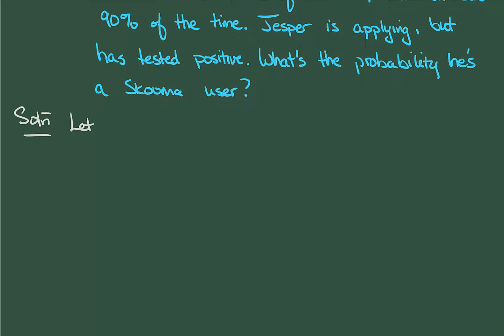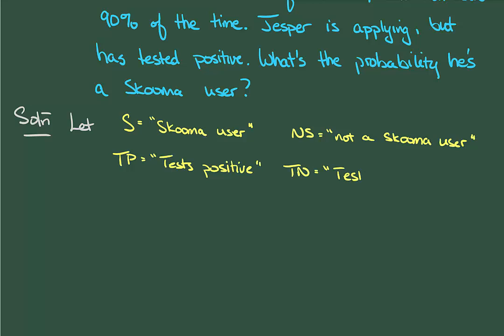Let's start by setting up event names. S will stand for skooma users, while NS is not a skooma user. TP will be those who test positive, and TN will be those who test negative. Both S/NS and TP/TN form partitions of our space, as you can quickly convince yourself.